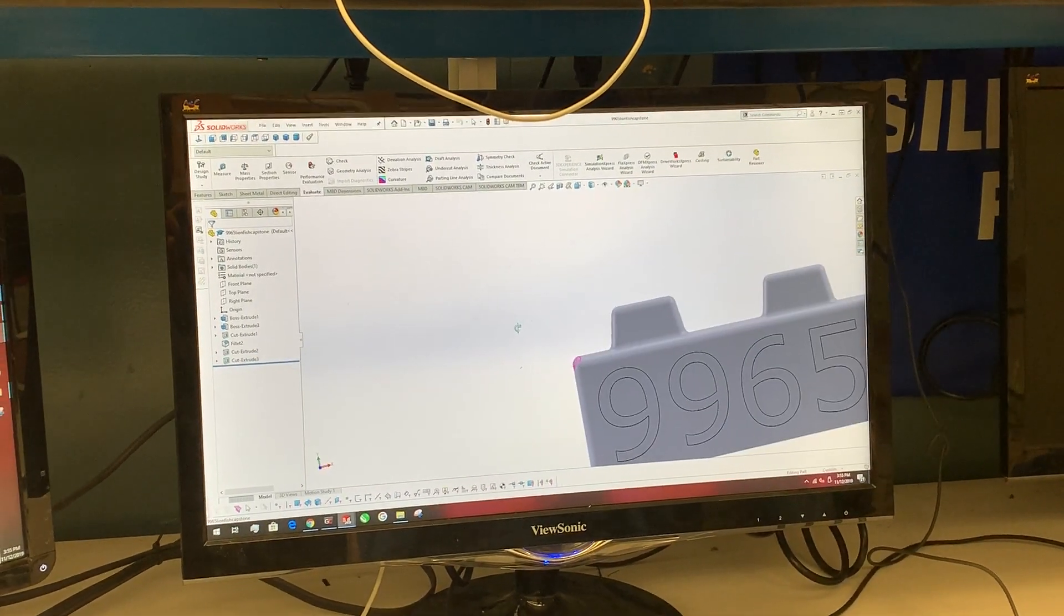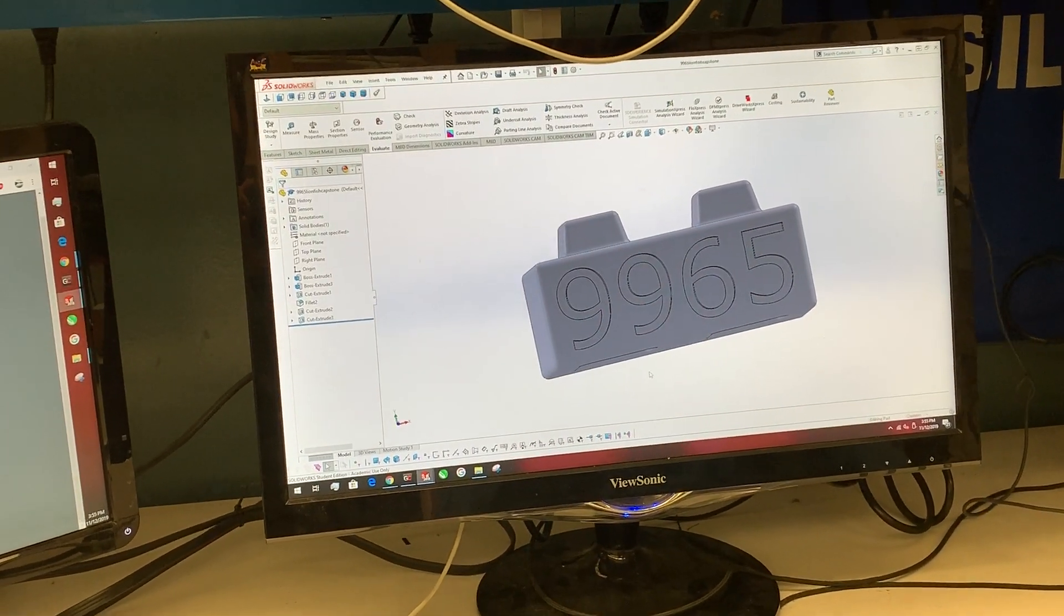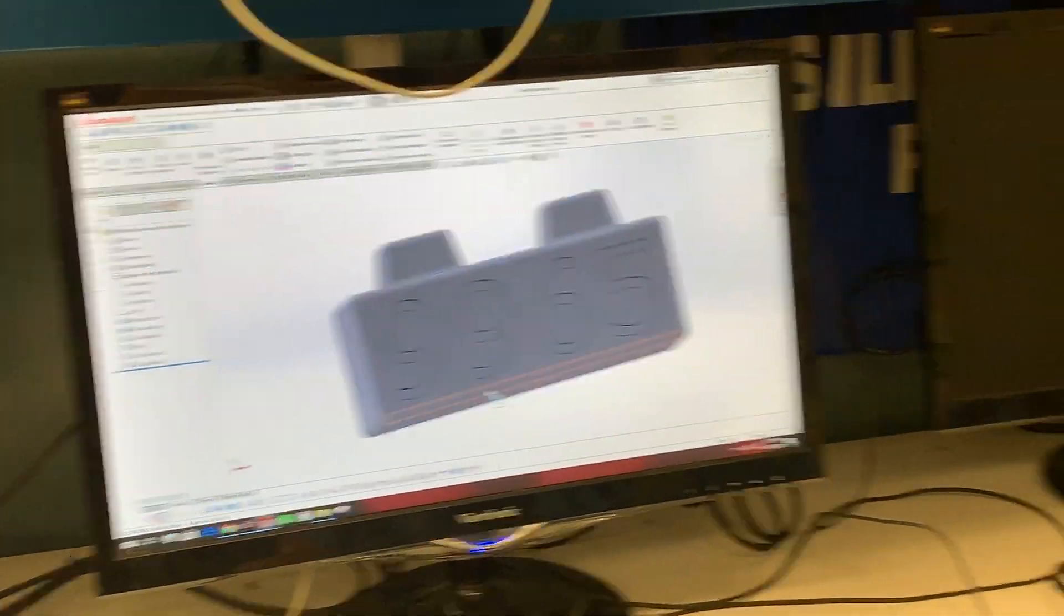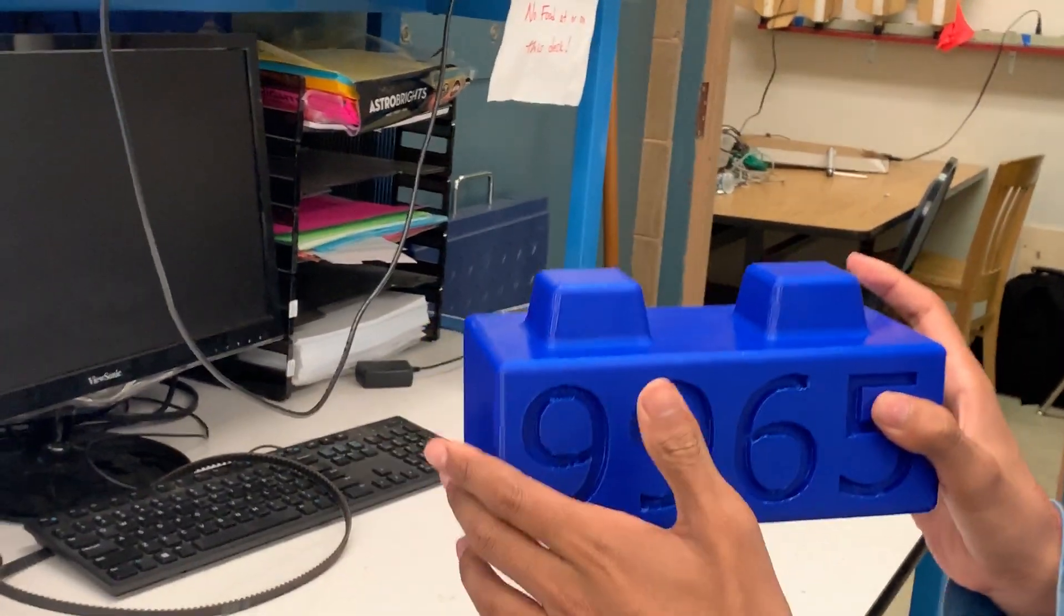And then we also put our team name 9965 so people could recognize that it was our capstone. This is the max dimensions you can have: four inches by four inches by eight inches.